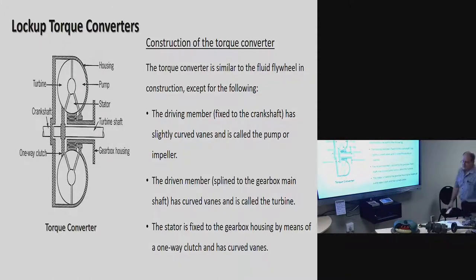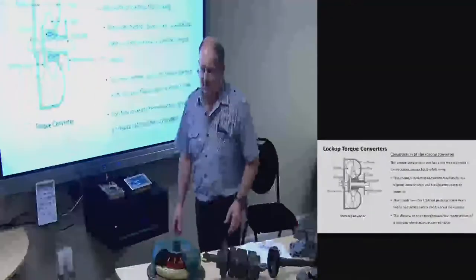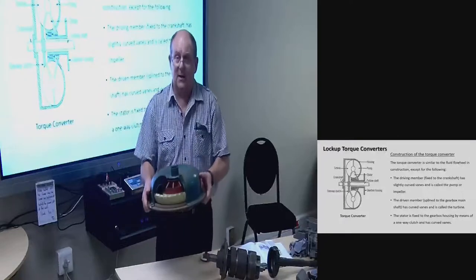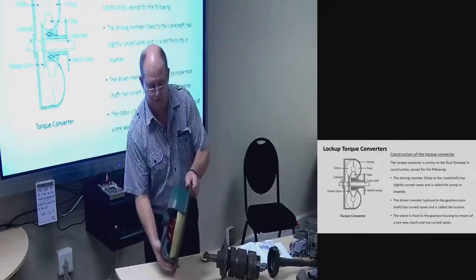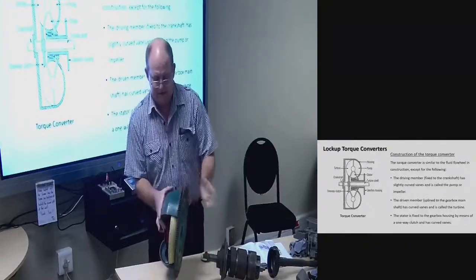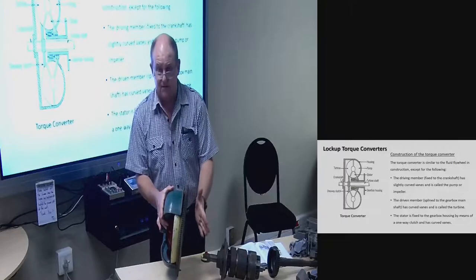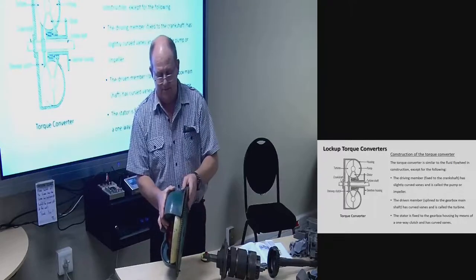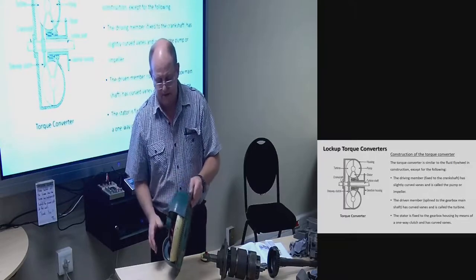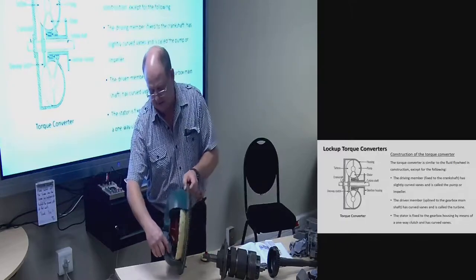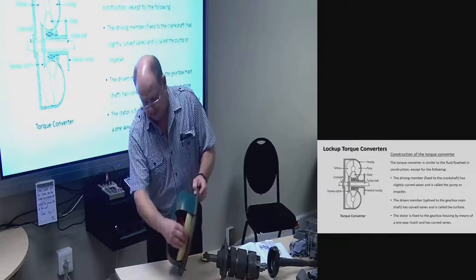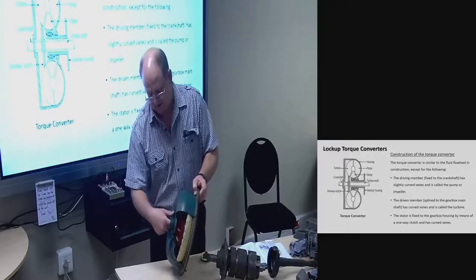The torque converter is similar to a fluid flywheel in construction, except: the driving member fixed to the crankshaft has slightly curved vanes and is called the pump or impeller. The driven member is linked to the gearbox main shaft and has curved vanes called the turbine. The stator is fixed to the gearbox housing by means of a one-way clutch and has curved vanes.